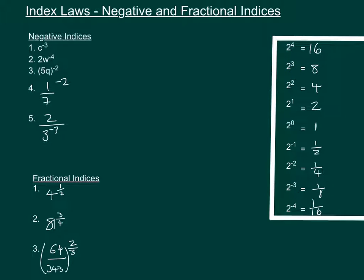We're going to use that idea for the negative indices. So if we look at number 1, we've got c to the power of minus 3, which equals 1 over c to the power of 3. For the next one, 2 to the power of 3 is 8, so 2 to the power of minus 3 is just the same as 1 over 8, which is 1 over 2 to the power of 3.